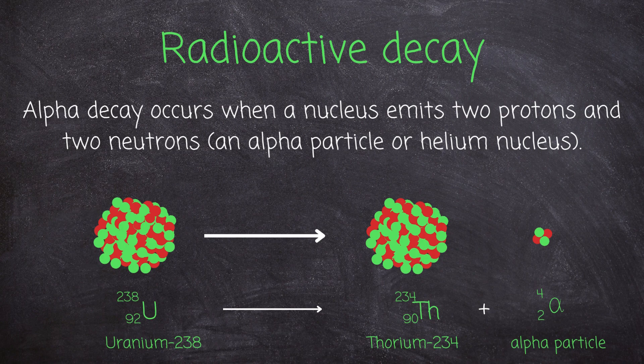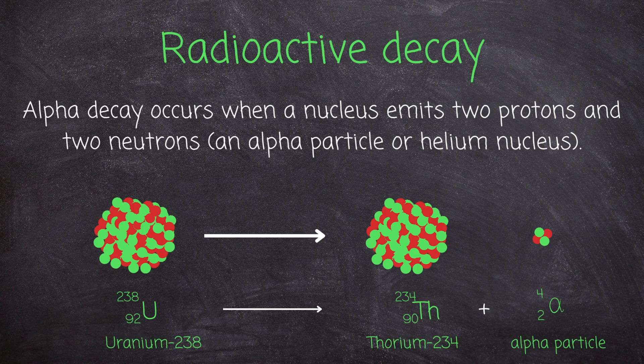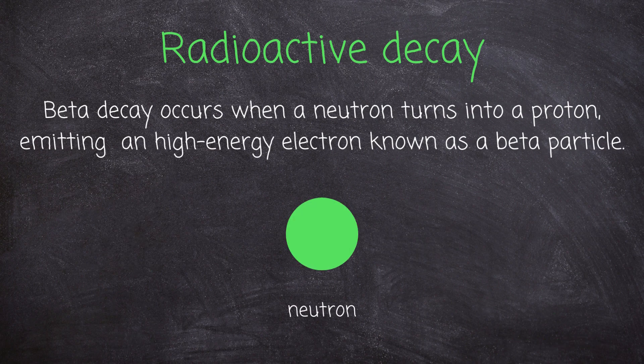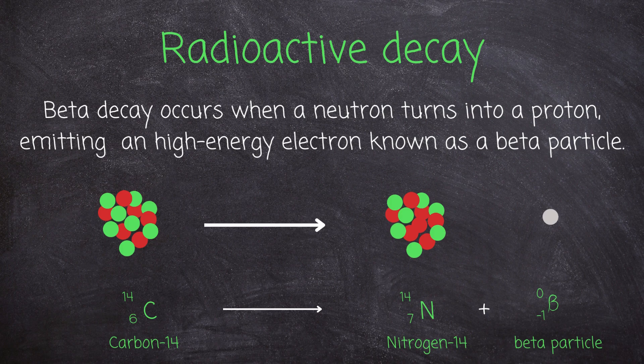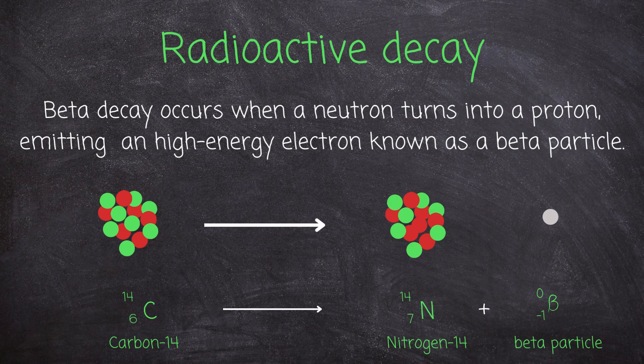Beta decay occurs when a neutron turns into a proton, emitting a high-energy electron called a beta particle. For example, carbon-14 undergoes beta decay, emitting a beta particle and becoming nitrogen-14. Since a neutron has turned into a proton, the atomic number changes from six to seven.